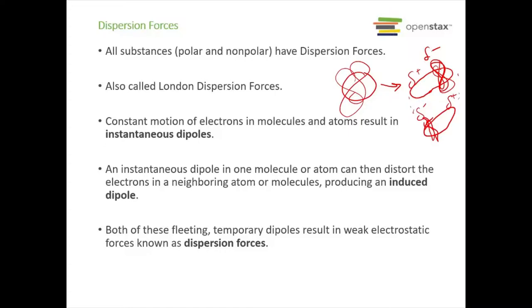These are instantaneous dipoles — they don't last; they're here and gone. This distorts the electrons in a neighboring molecule, making an induced dipole. The first molecule has this instantaneous dipole and then induces a partial positive in another molecule to attract to it. These are very, very weak electrostatic attractions that we call dispersion forces. Even our nonpolar compounds do this, but again, these are very quick — here and gone.